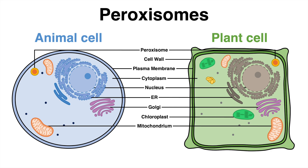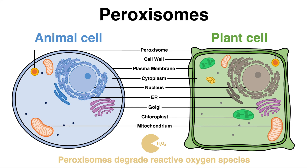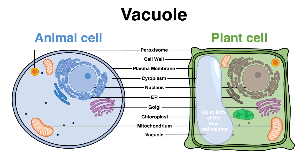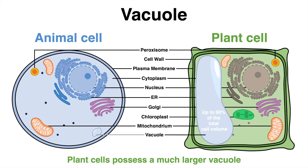Peroxisomes are organelles that can accumulate and degrade peroxides, which are reactive oxygen species that can cause damage to other cell compartments. Hydrogen peroxide, for example, is an unavoidable by-product of some biochemical reactions. Plant cells have a gigantic permanent vacuole that can take up to 90% of the total cell volume. Although some animal cells may also possess a small vacuole, this is nothing compared to the one in a plant cell. The vacuole maintains internal pressure — called turgor — contributing to the cell's total stability, and is also seen as a large trash can that can digest waste inside the cell.